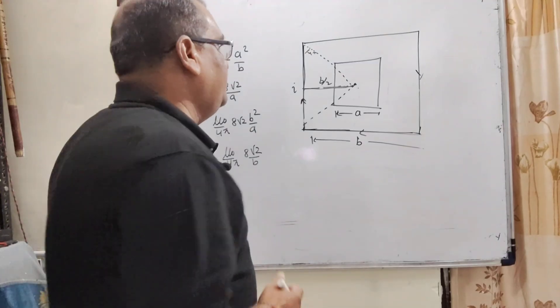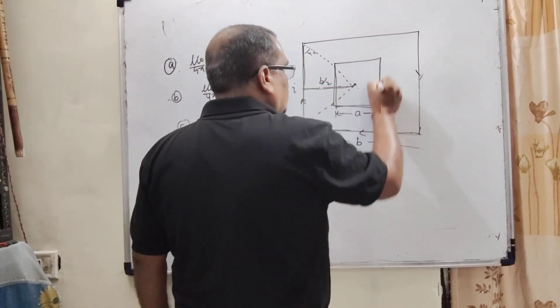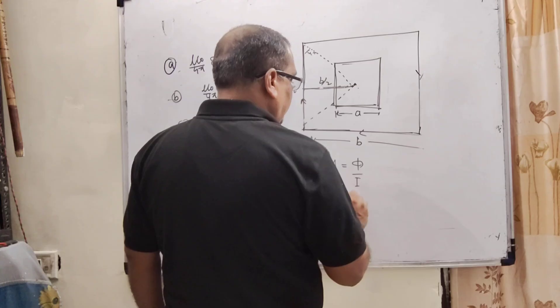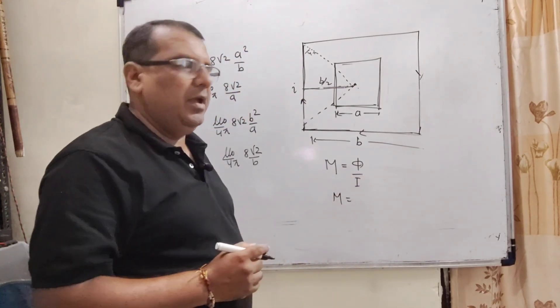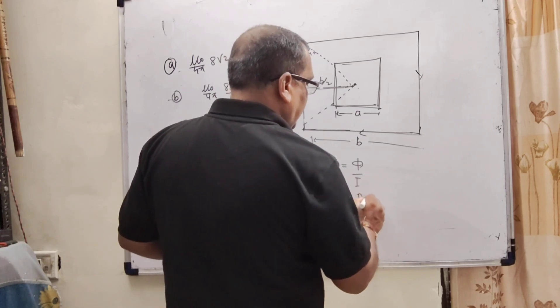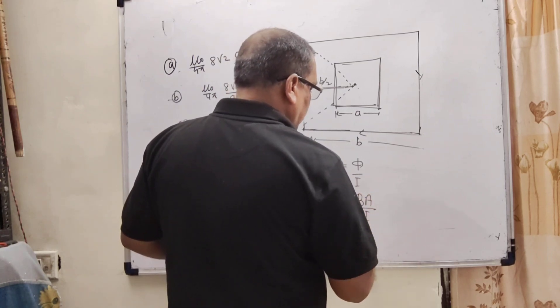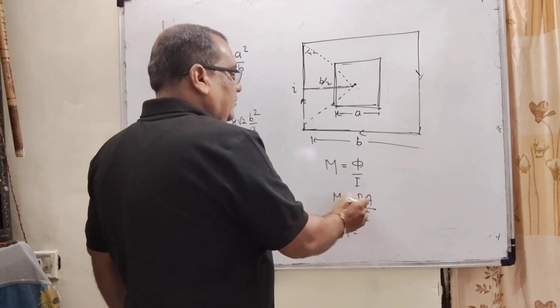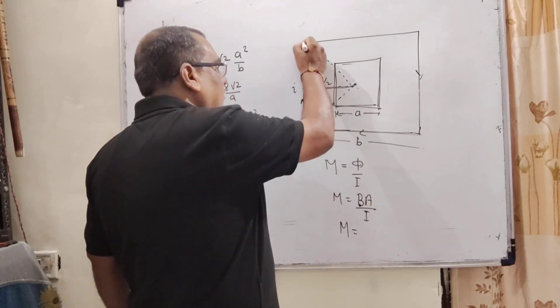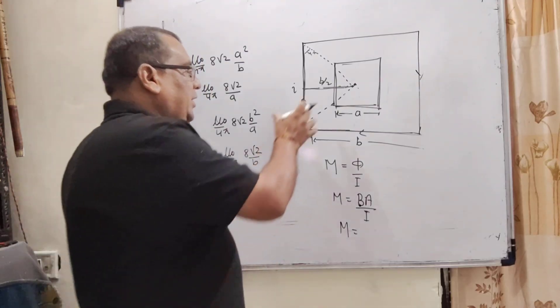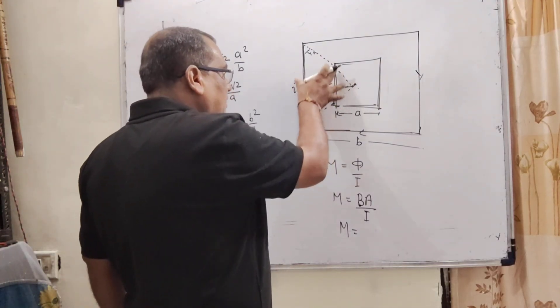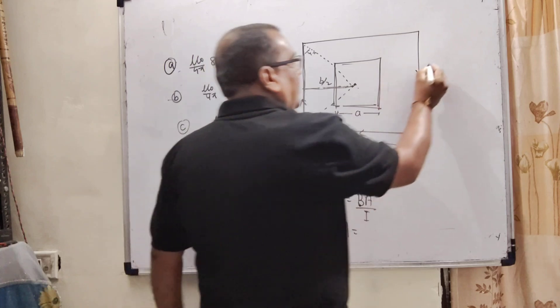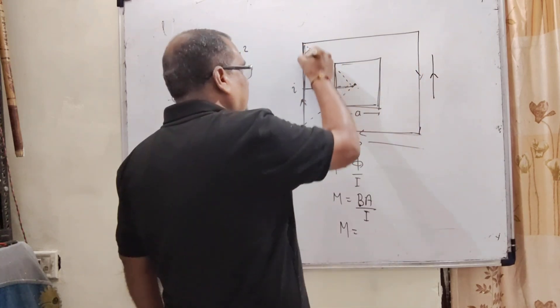So let's calculate mutual induction of inner square loop. M is equal to φ by I, and what is the formula of flux? That is change either in magnetic field or in area. So here B times A by I. Here magnetic field, we have to calculate the mutual induction of this coil, but we get the magnetic field from this loop. So here we have to take this part and multiply 1, 2, 3, 4, multiply by 4. So here let us first take this part, magnetic field produced from this length.